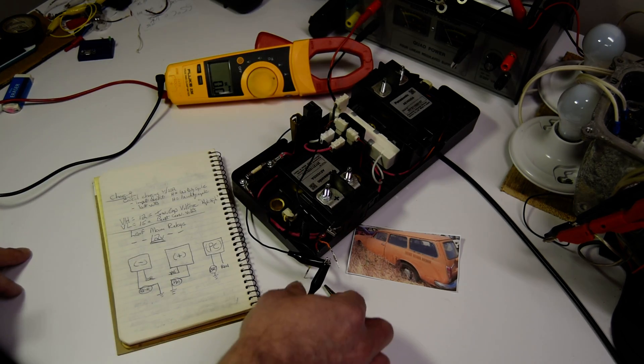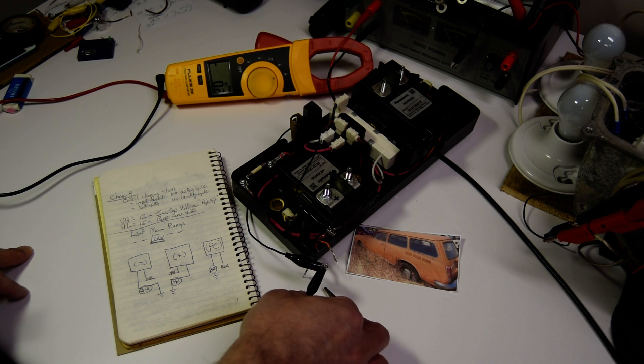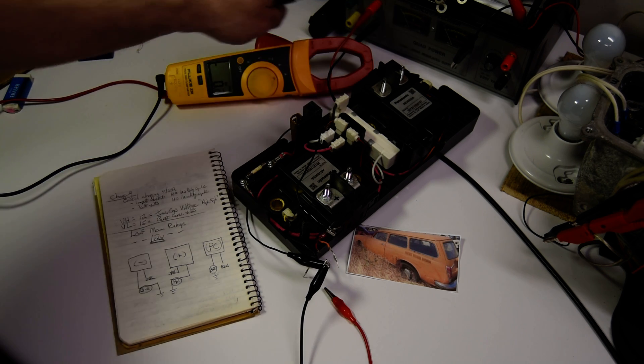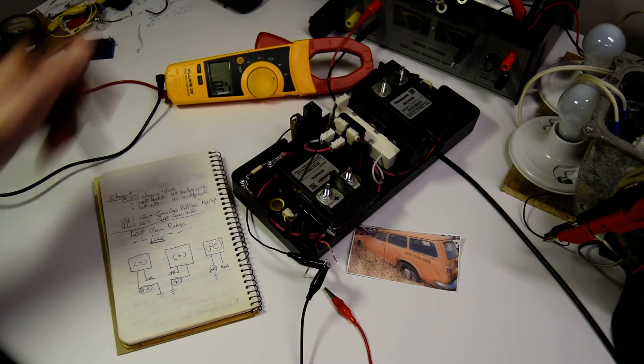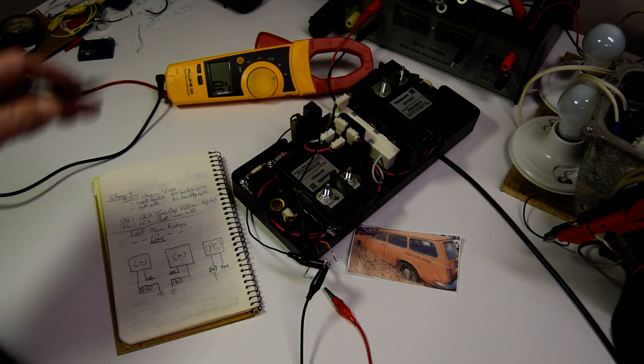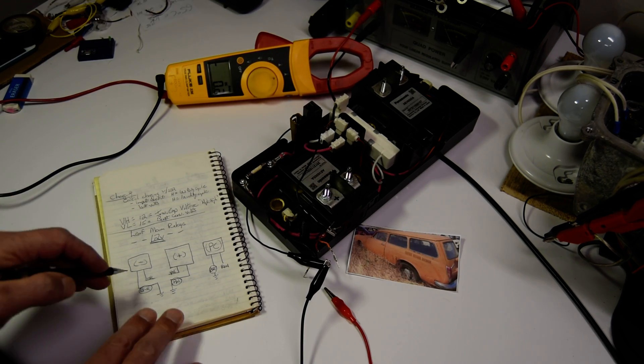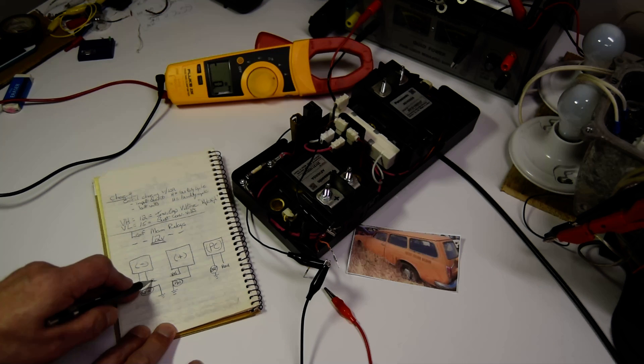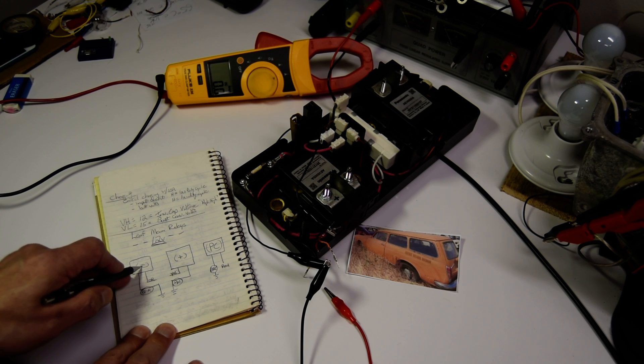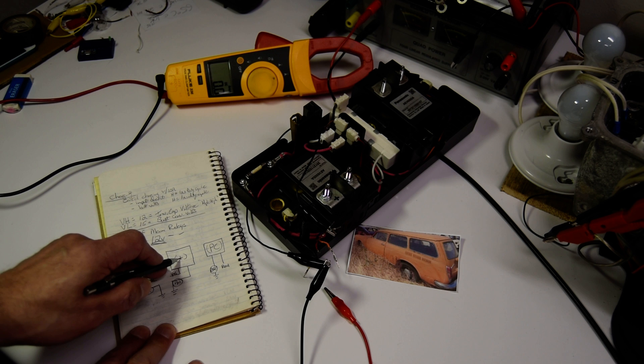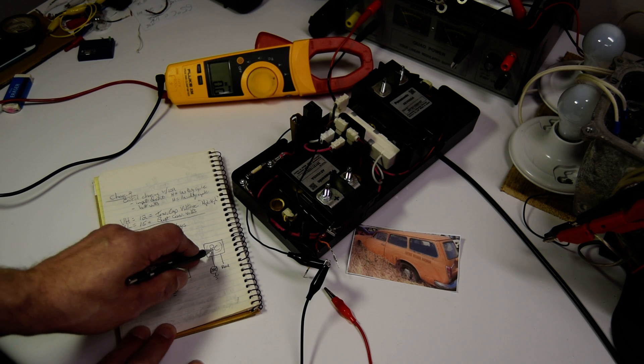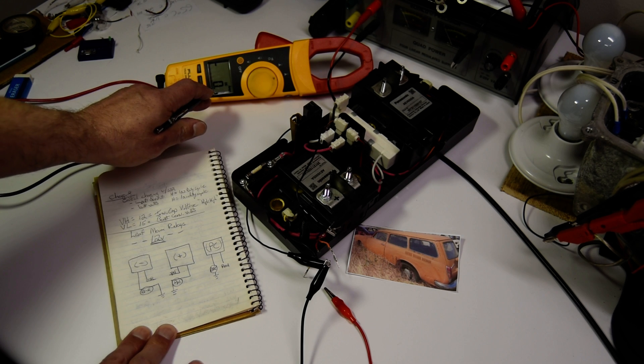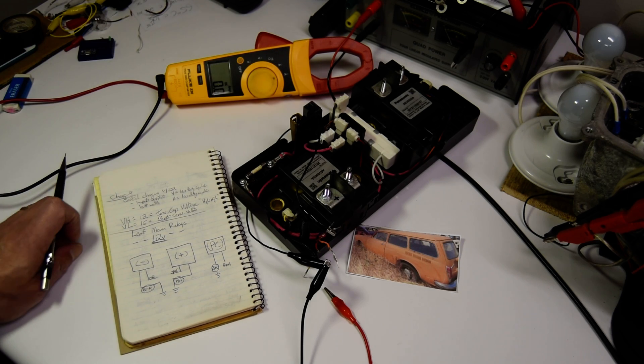And then I connected this black wire, which is 12 volt ground, back to my regulated power supply, which is set for 12 volts regulated. And I will connect the orange for the negative relay, the yellow for the positive relay, and the red for the pre-charge relay, and see how many amps each one draws independently.